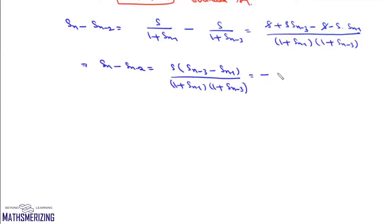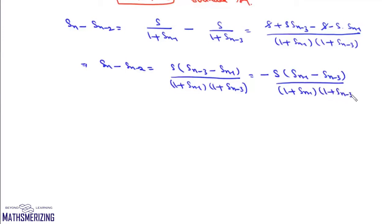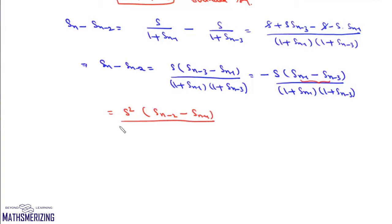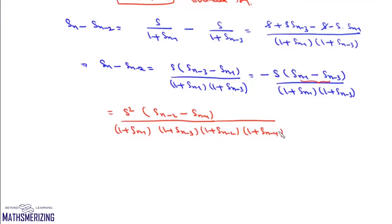We can write this as minus S times (SN minus 1 minus SN minus 3) upon (1 plus SN minus 1)(1 plus SN minus 3). Now simplifying SN minus 1 minus SN minus 3, we get S squared times (SN minus 2 minus SN minus 4) upon (1 plus SN minus 1)(1 plus SN minus 3)(1 plus SN minus 2)(1 plus SN minus 4).